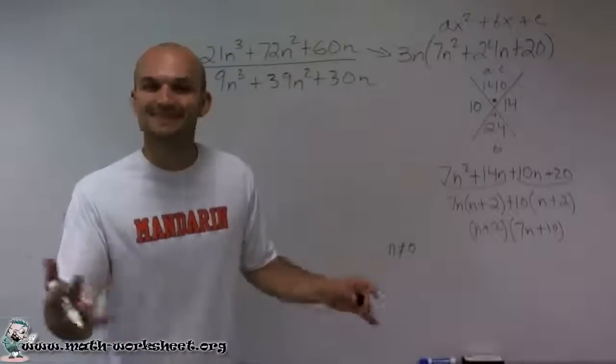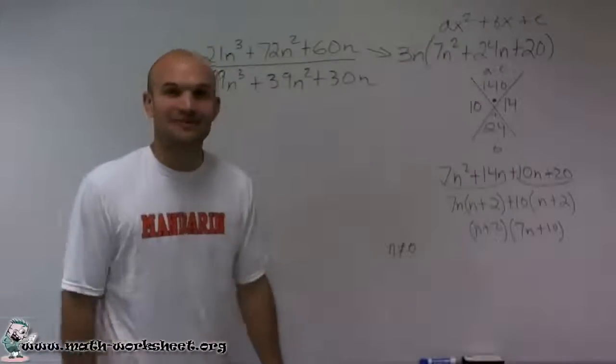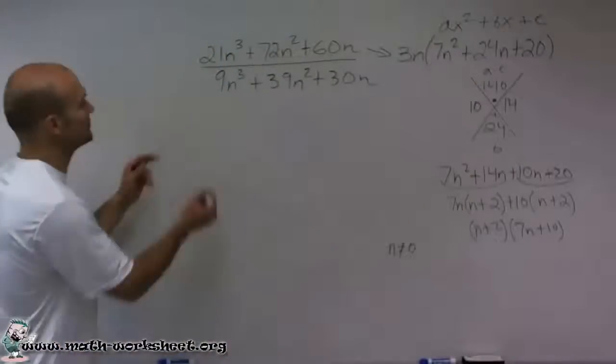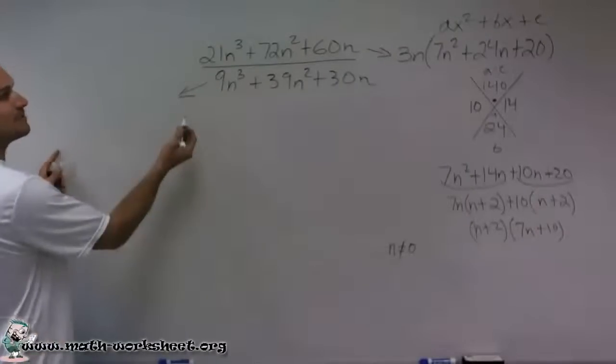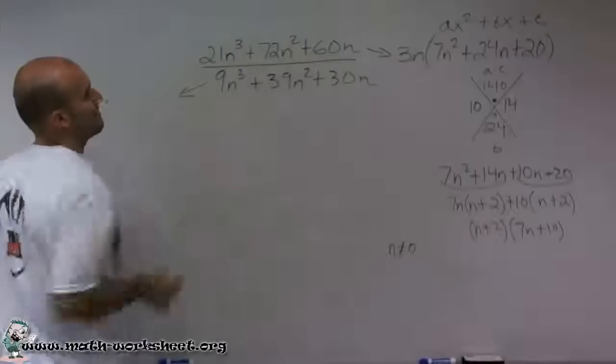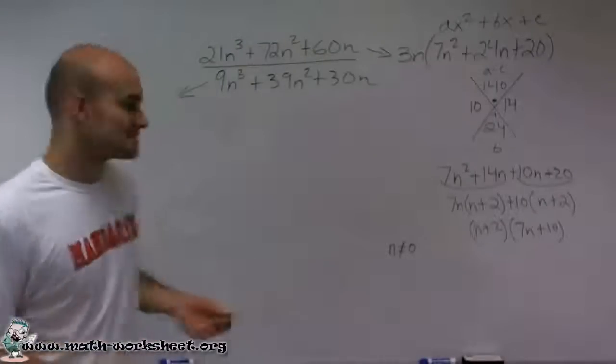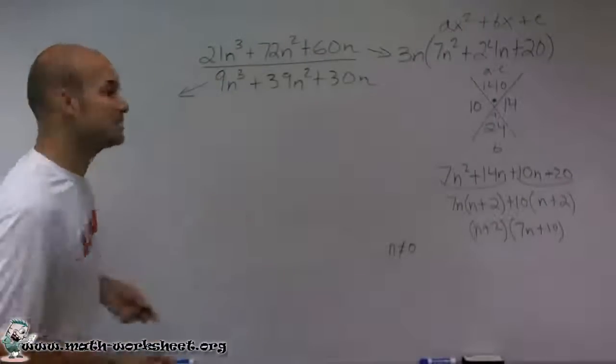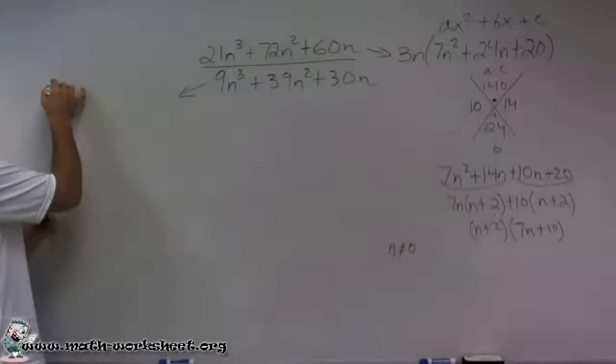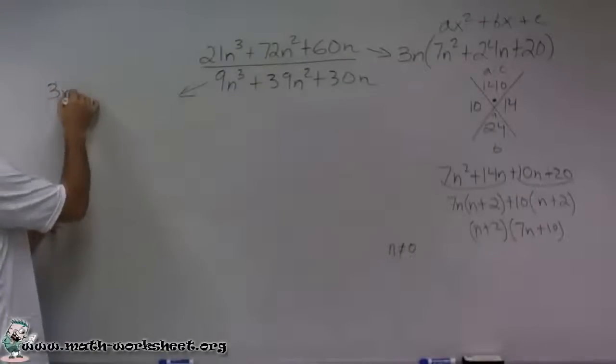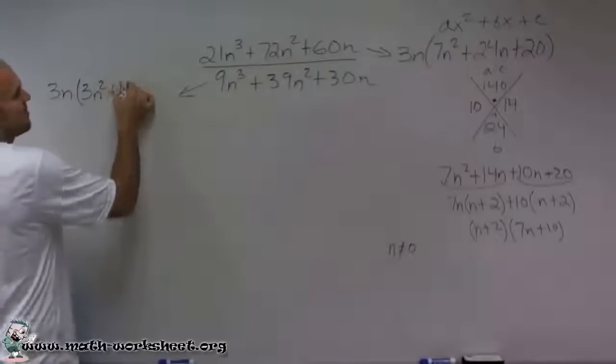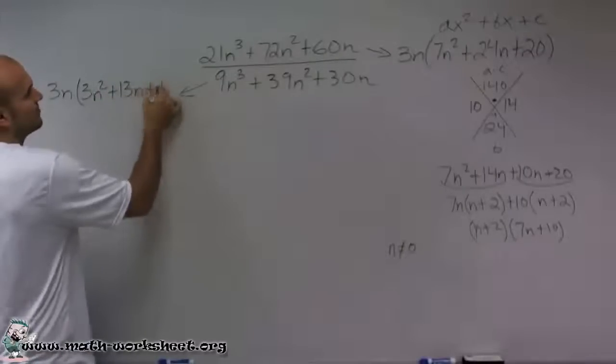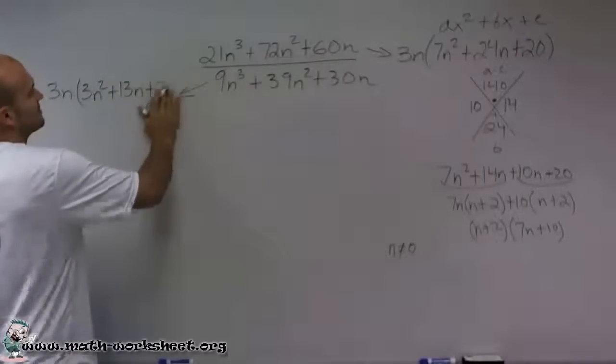OK. So that was the numerator. Now let's do the same thing for our denominator. So for the denominator, I'm going to do the same thing. What can I factor out out of all three of these terms? And what you notice is I can, again, factor out a 3n. So I'll factor out a 3n. When I factor out a 3n, I'm left with 3n squared plus 13n plus 10.